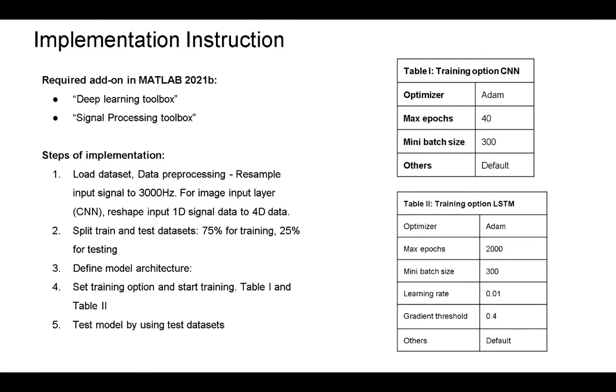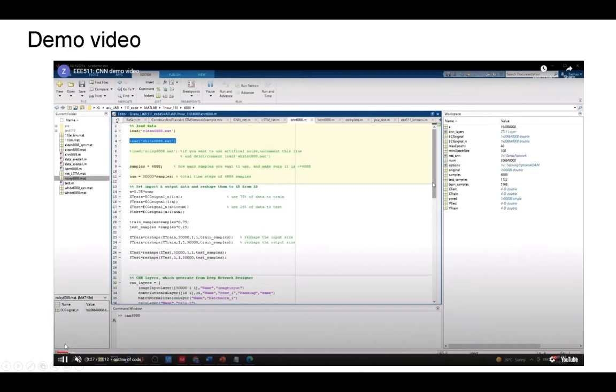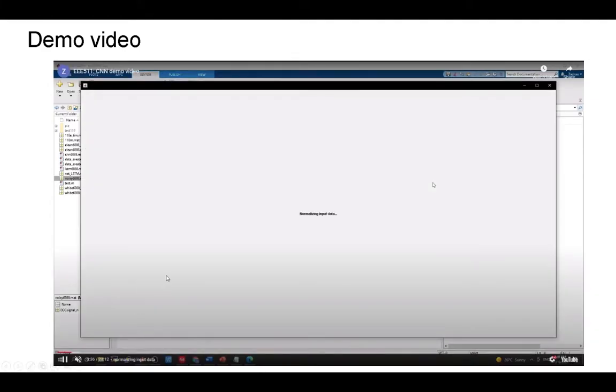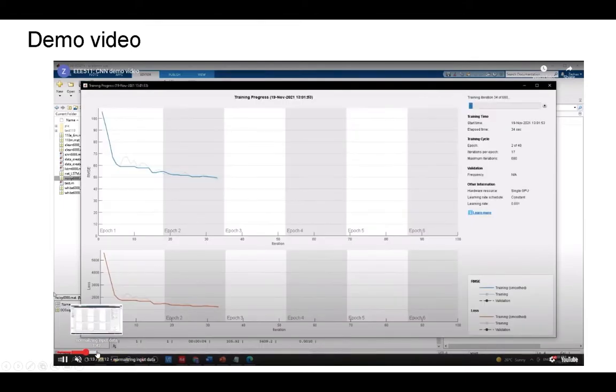I'm going to show you a demo video of our CNN module. We use white Gaussian noise as our input data, loading the code. It is normalizing input data. Now it will begin training.